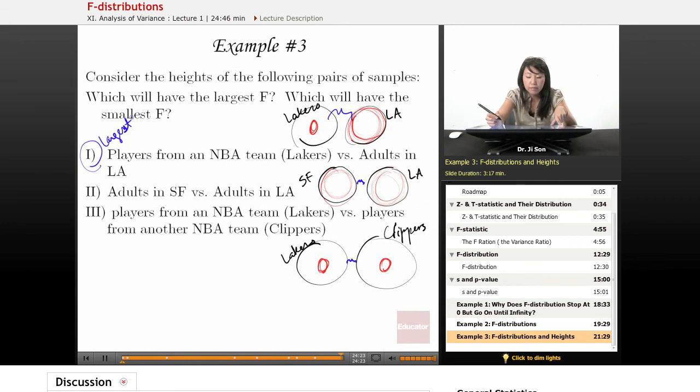Well, which will have the smallest F? I would say the smallest F would probably go with this one, because not only does it have a small numerator, but it has an extremely large denominator. So I would say this one would definitely have the smallest F.